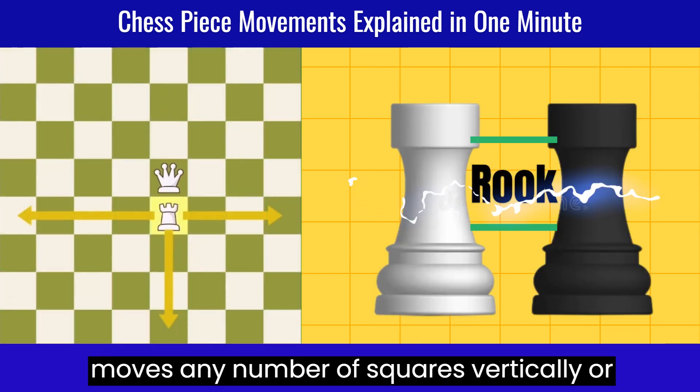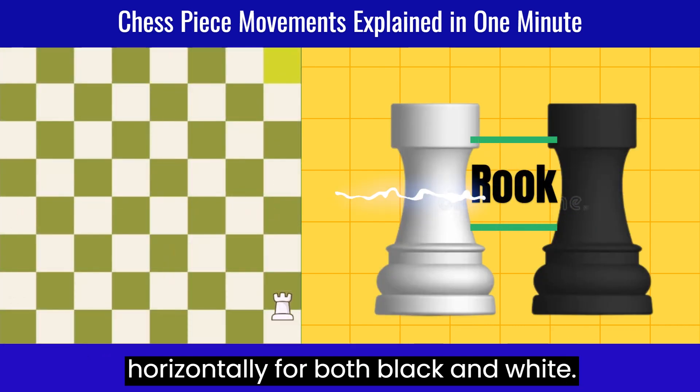The rook moves any number of squares vertically or horizontally for both black and white.